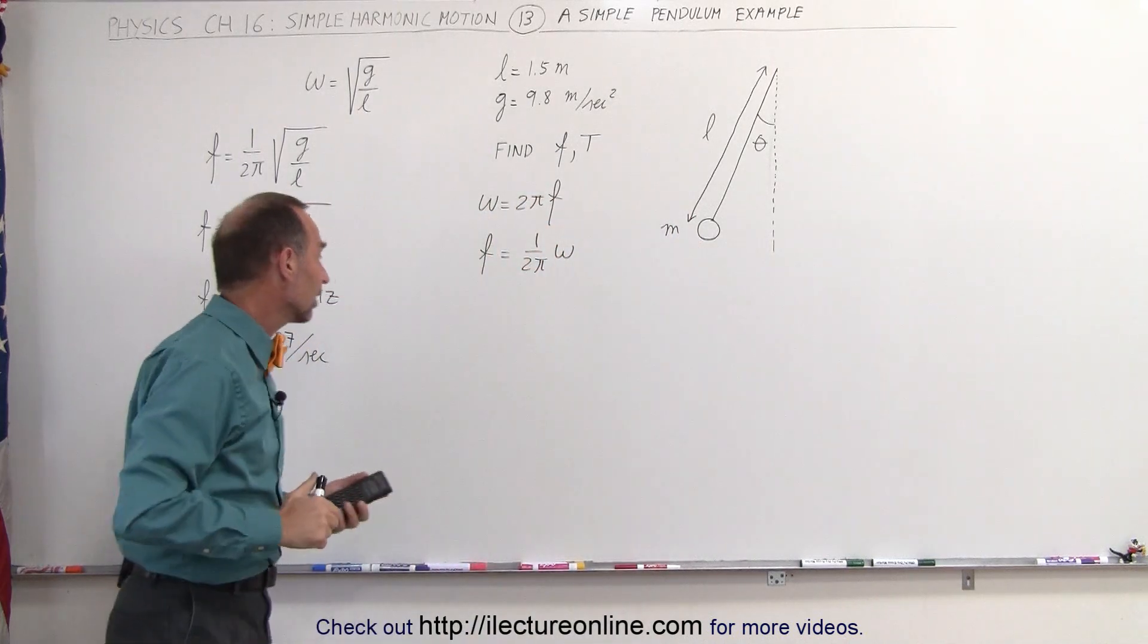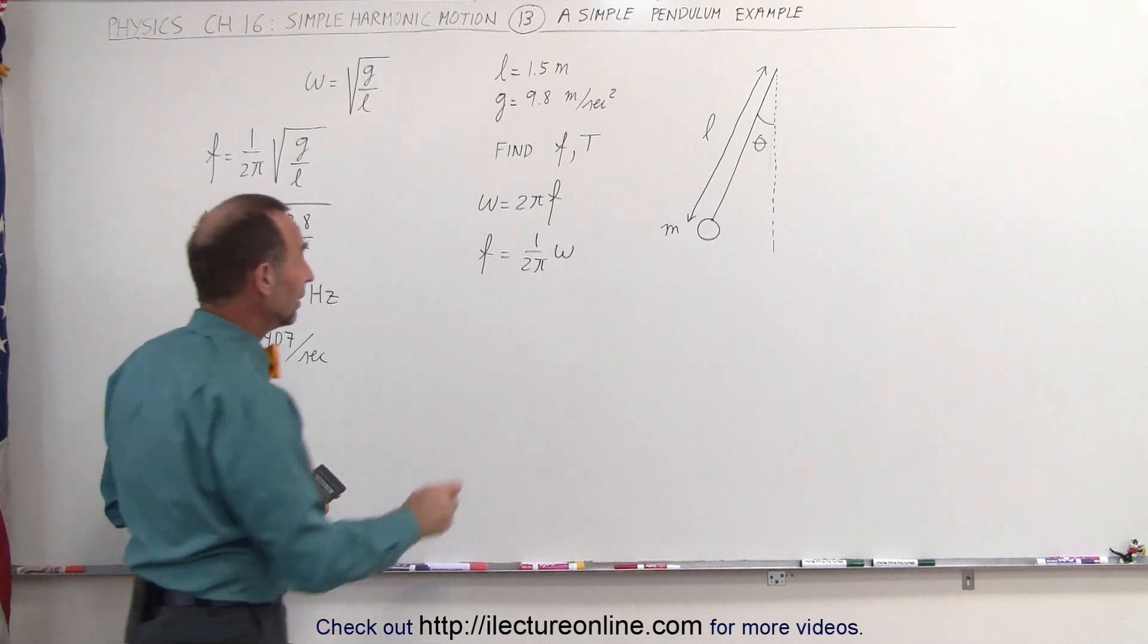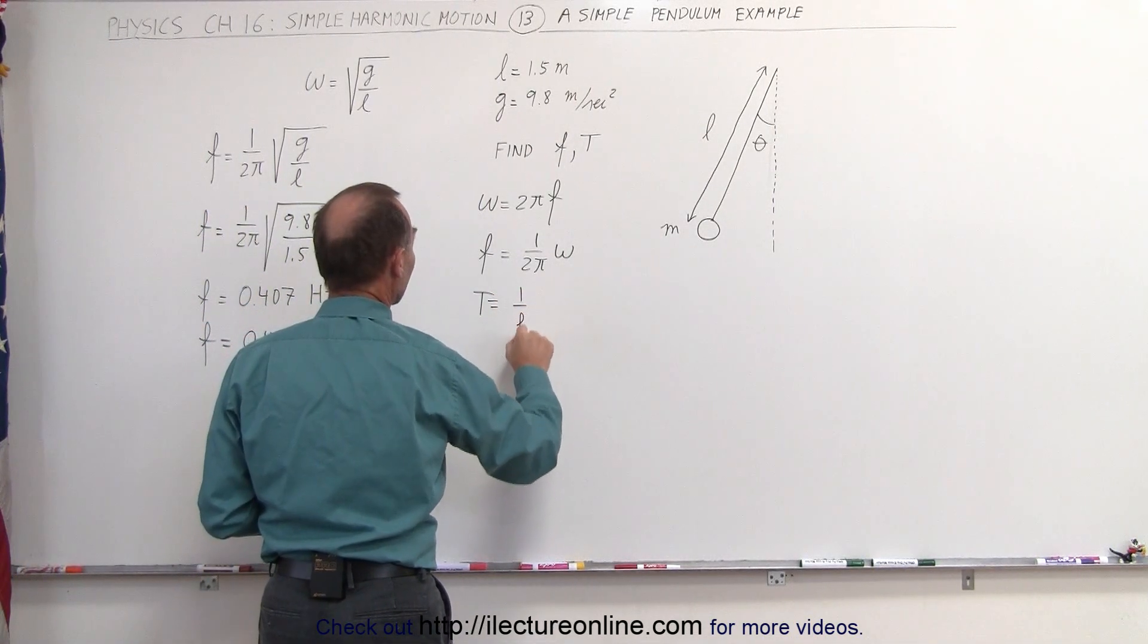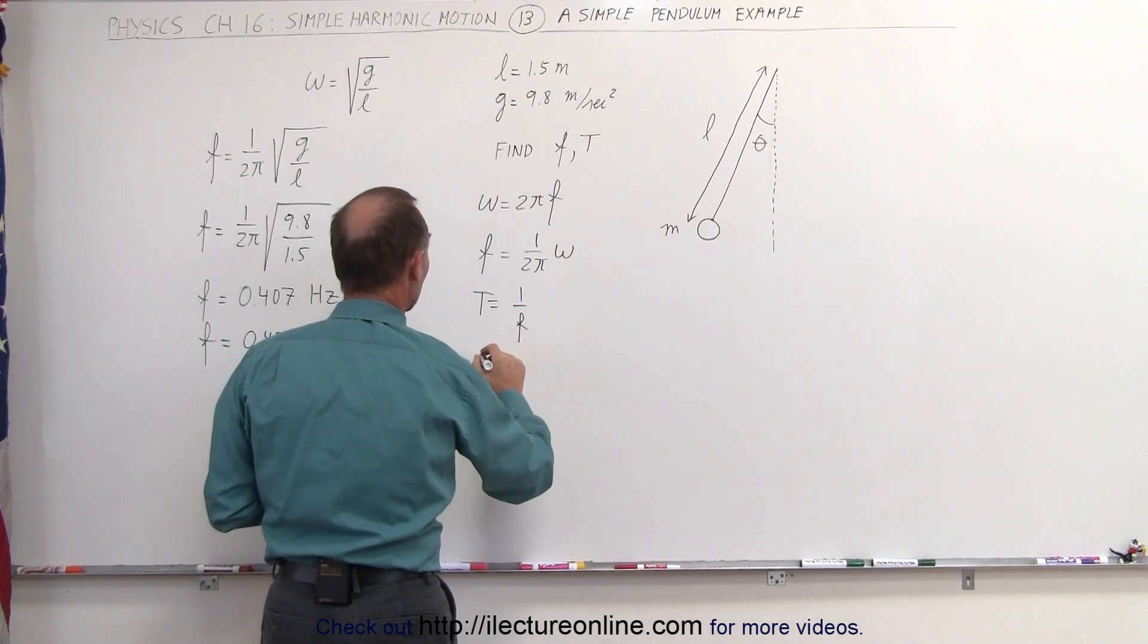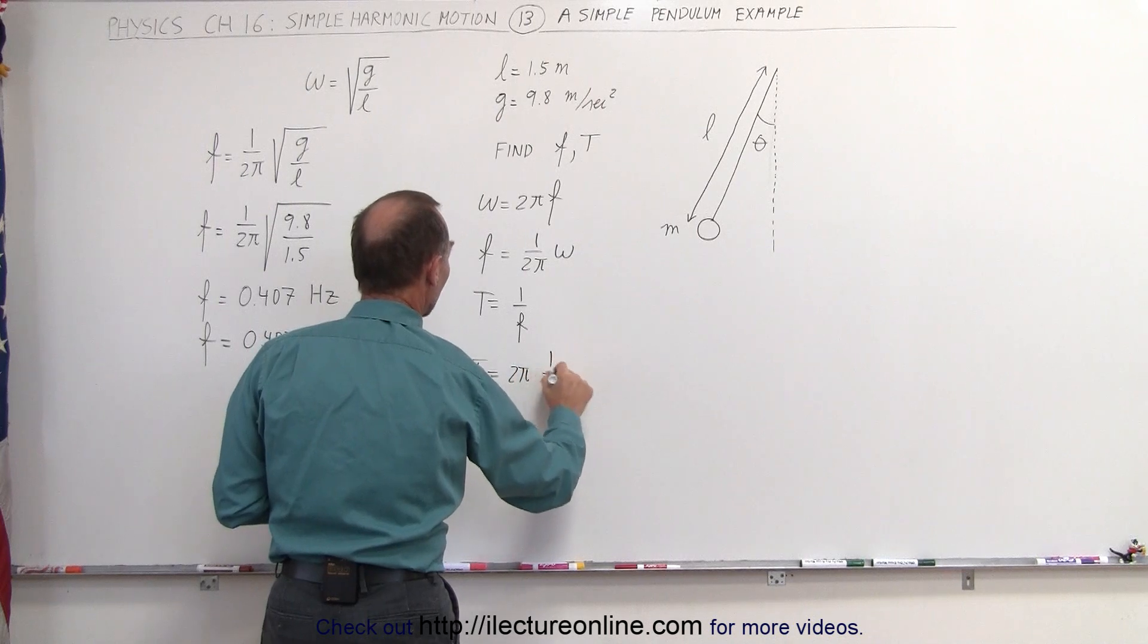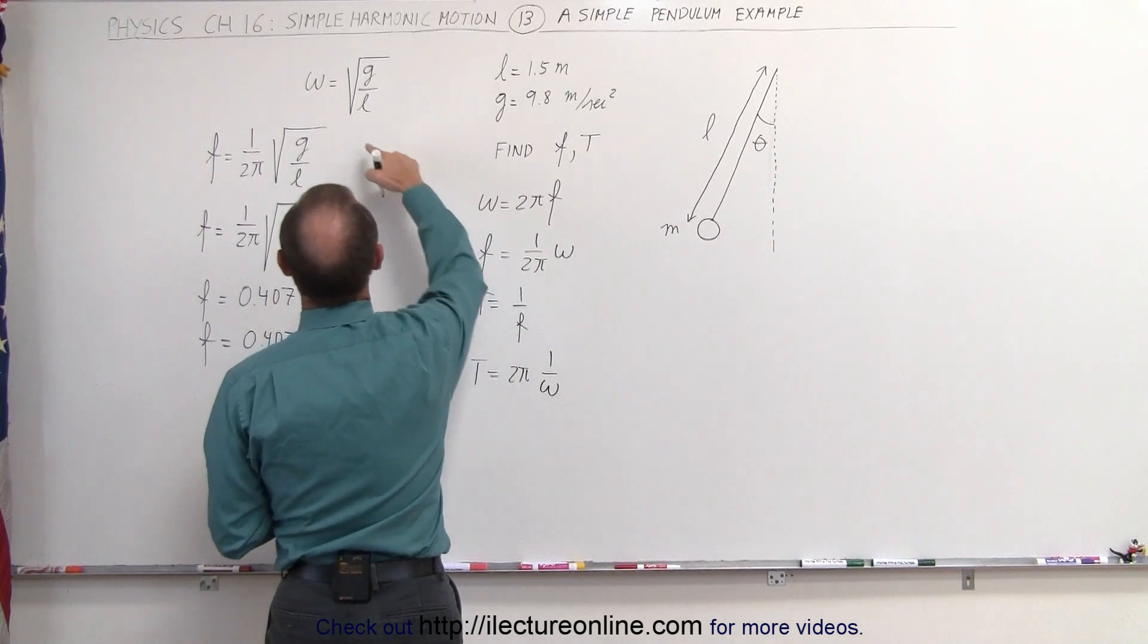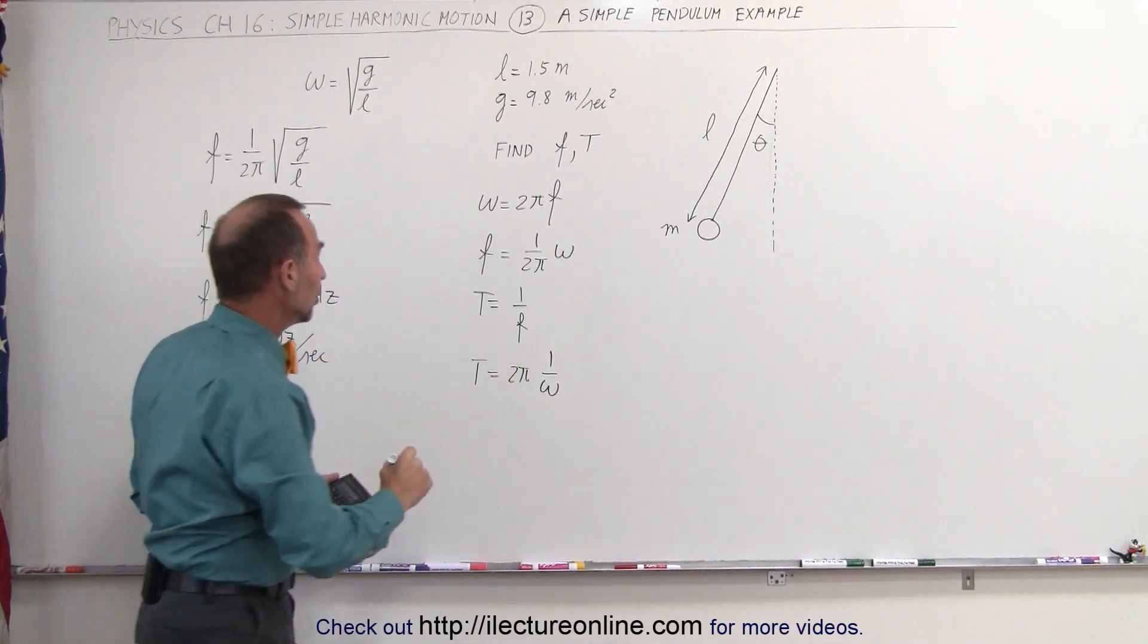To find the period, we can simply take the inverse of that. The period is equal to the inverse of the frequency. The general equation, therefore, is when we take the inverse of that, that would be period is equal to 2 pi times 1 over omega. Since omega is equal to the square root of g over l, the inverse of omega would be the square root of l over g.